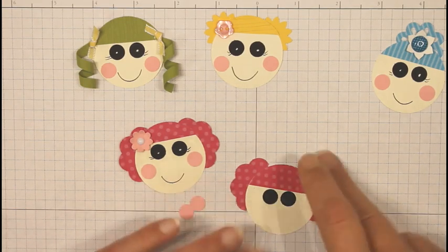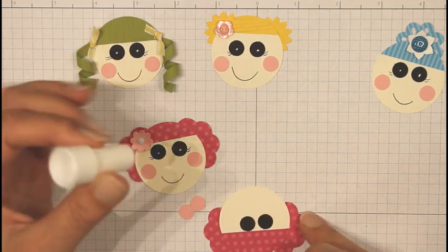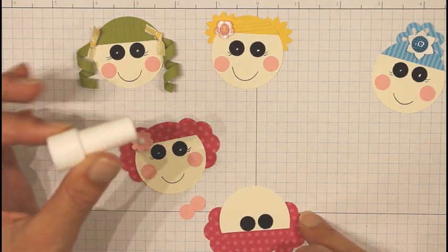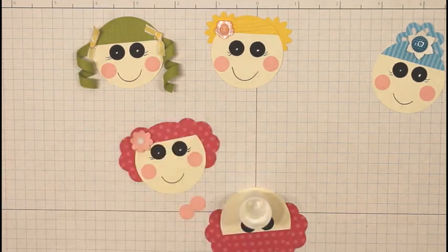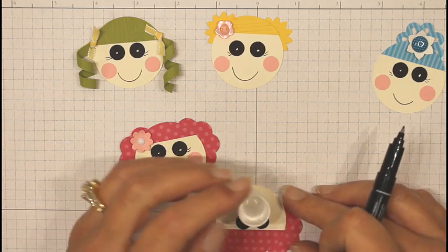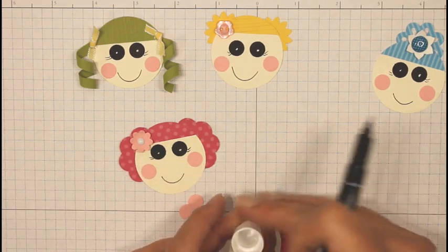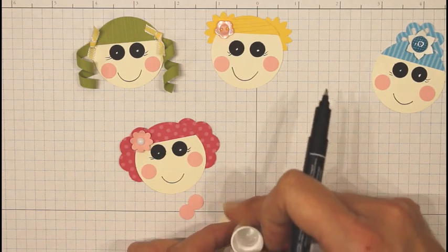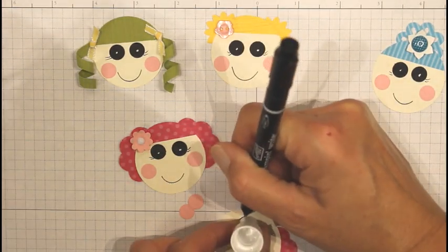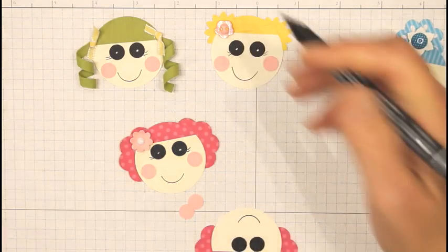Now to draw the mouth on, I turn the face upside down and I'm using the cap from the two-way glue pen with the smallest end down and I just position that where I think I would like the mouth to be, kind of centered in between the eyes and then trace the mouth on.